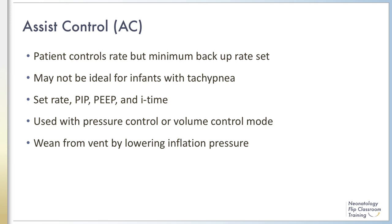AC can be used in pressure control or volume control modes. In pressure control mode, the PIP needs to be adjusted with changes in lung mechanics. It can be used with volume targeting modes, which is the preferred method of use, and the manual adjustment of PIP is not required with changes in lung mechanics and compliance. Weaning from the ventilator in this mode is accomplished by weaning the inflation pressure (PIP); lowering the backup rate, assuming a physiologic rate was selected, will not affect the overall level of respiratory support.